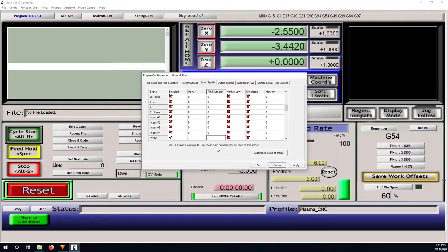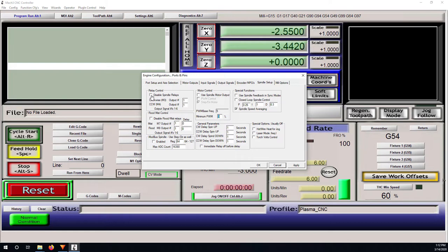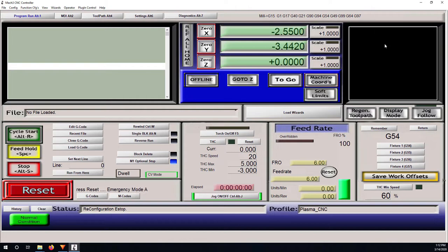Or the other option is to go down further until you see probe. You just enable it and put in port number 3, pin number 2 for this type of INNA motion breakout board. I'm taking the chance to show you the torch setup here in output signal. I will connect the torch relay on output number 1, so I just enable this and put port number 3, pin number 1. In spindle setup, uncheck this and make sure the output number is number 1. Uncheck this, you're not going to use this. Click apply and OK, and the setup is ready.